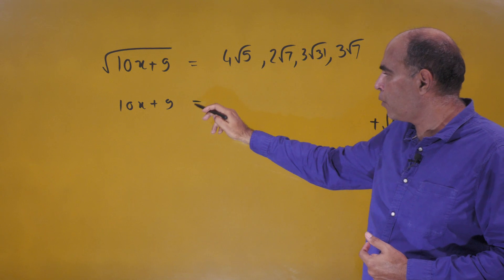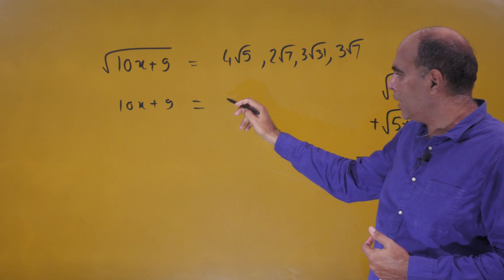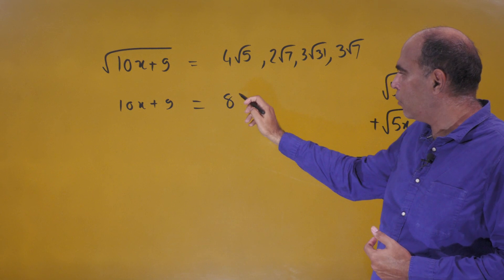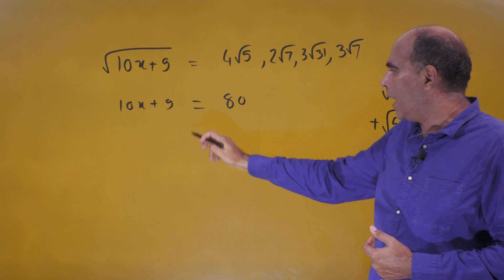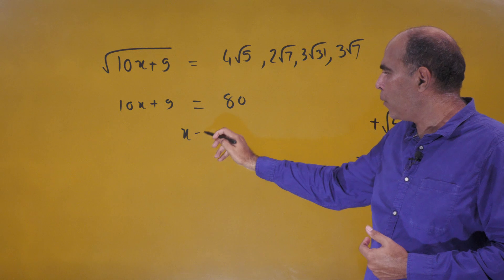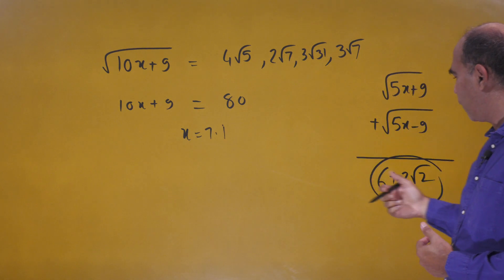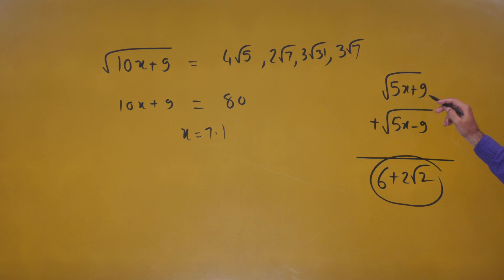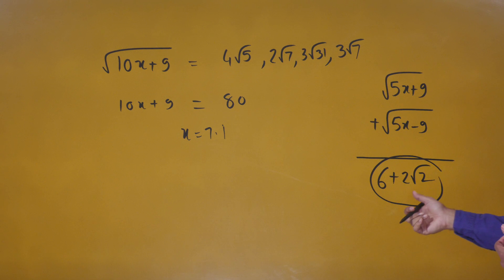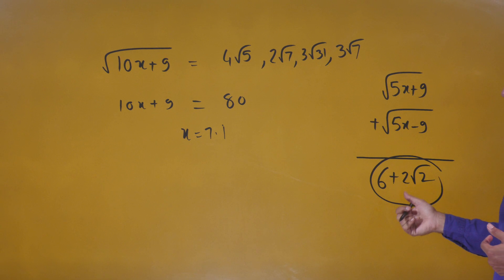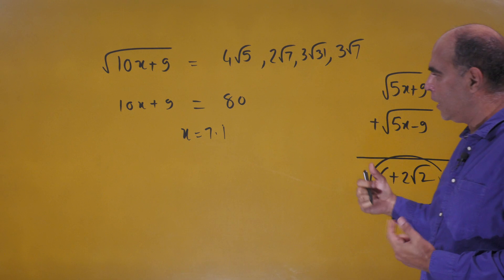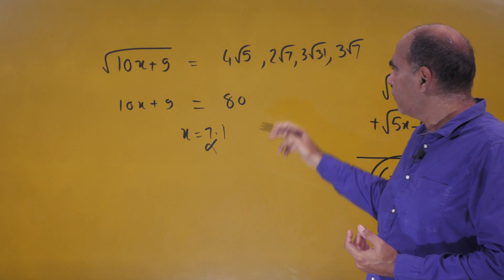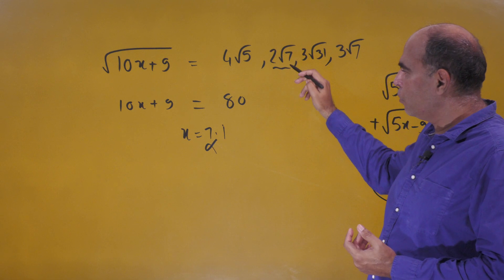Squaring both sides, 10x + 9 = 80, so x becomes 7.1. If I put x = 7.1 here, I get √(35.5 + 9) = √44.5 — there's no way this becomes 6 in any context, so this option is gone.